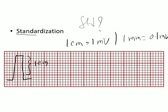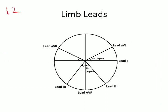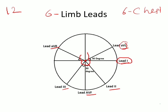A standard ECG consists of 12 leads: six limb leads and six chest leads. The limb leads are Lead I, II, III, aVR, aVL, and aVF. If we imagine the heart at the center, Lead I looks at the heart from the horizontal left side, aVL from the left shoulder, aVR from the right shoulder, Lead II from the left foot, Lead III from the right foot, and aVF from the umbilicus.